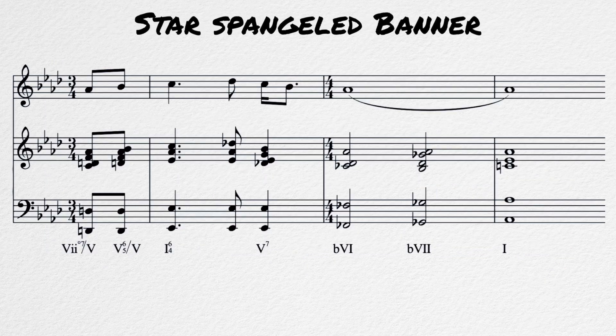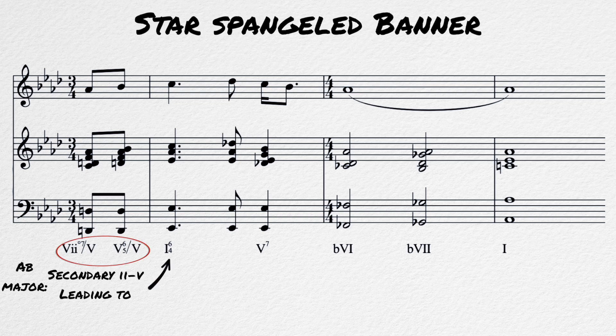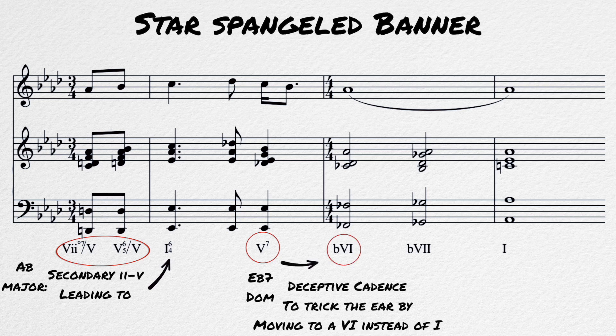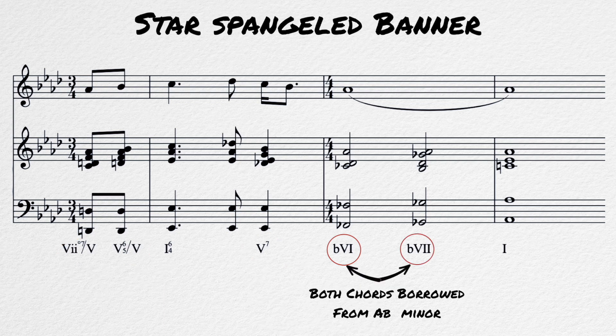Another great example of this is the epic ending to the Star Spangled Banner that is commonly used. There are several artists who have done this, but Whitney Houston at the 1991 Super Bowl is probably the most memorable. The key here is A flat major. We move from the dominant chord, and then instead of moving back to the tonic, we have a deceptive cadence to the flat sixth. A deceptive cadence is when a dominant seventh moves to a sixth chord instead of the tonic, tricking the ear. This flat sixth is borrowed from the parallel minor key, which then moves to the flat seventh — also from the parallel minor — before moving to the tonic.